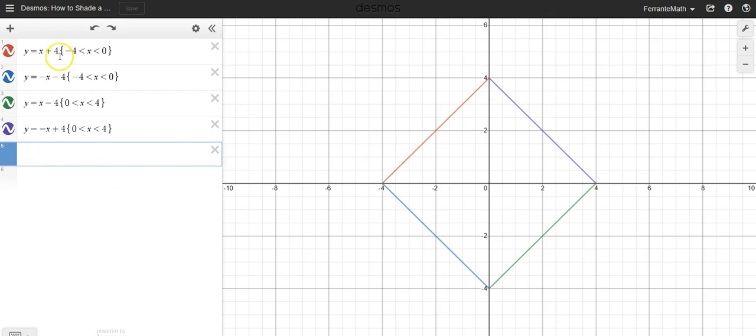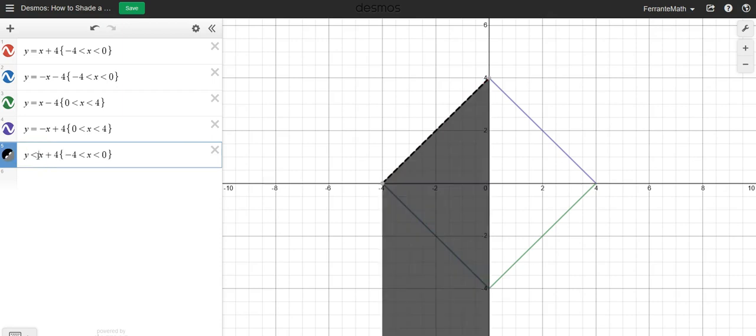Now what I want to do is change these to an inequality. So let me just copy that real quick and put it down here. I'm going to change this to an inequality and you'll see what happens. Let me change that color. You'll see that the shading now goes from everything that's less than x plus 4, which is this line, and it shades down.